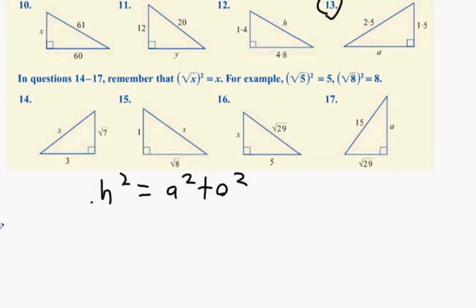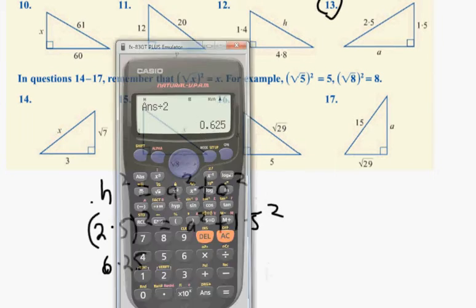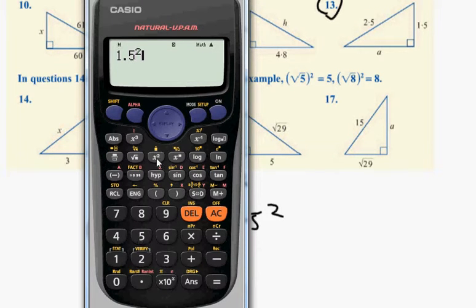Clearly in this diagram, 2.5 is the longest side. Then it doesn't matter the order you put the other two in. So this one can be A squared and the other one can be 1.5 squared. So let's use your calculator to square them out. You get 6.25 for that one. 1.5 squared I think is 2.25.